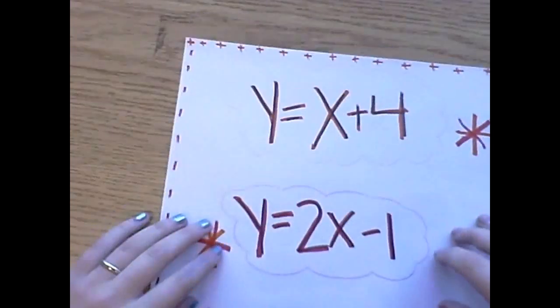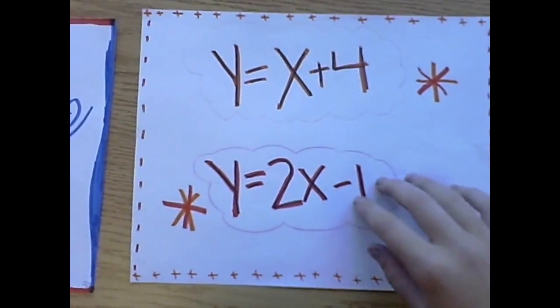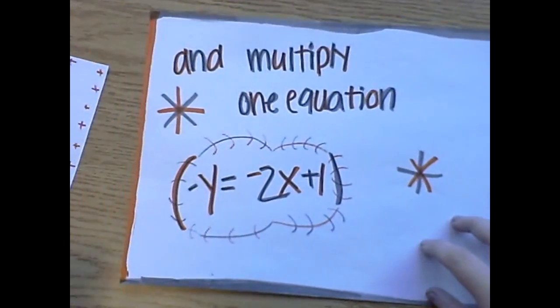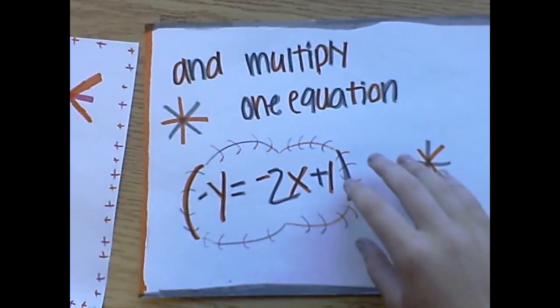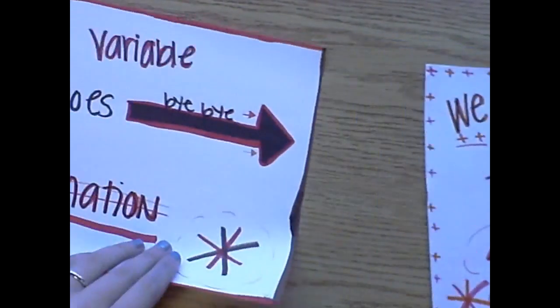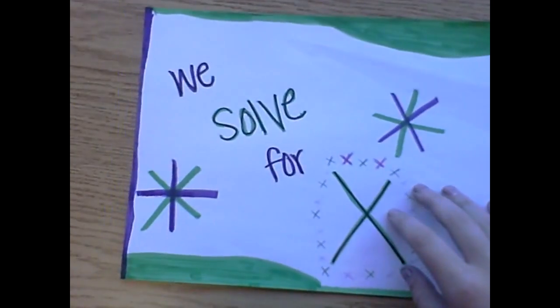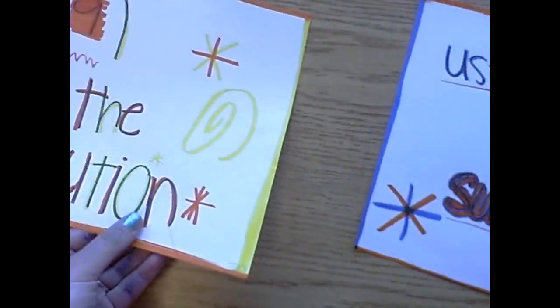Y equals X plus 4 and Y equals 2X minus 1. We line up the variables and multiply one equation so Y equals negative 2X plus 1. When we add the two equations, one variable goes to zero. Then we solve for X and use some substitution — 5 comma 9 is the solution.